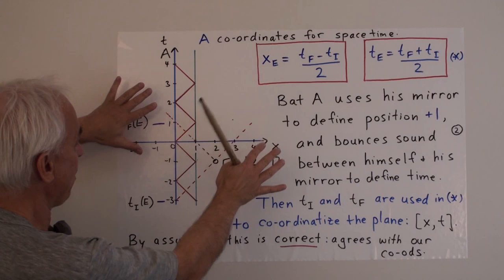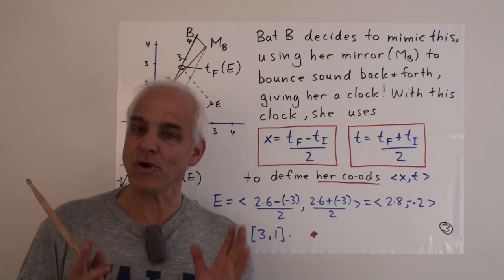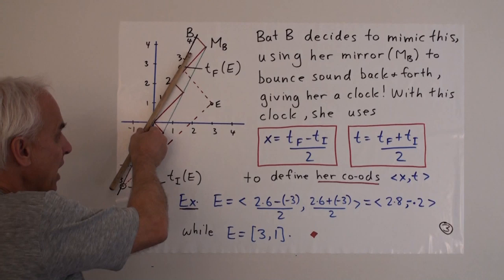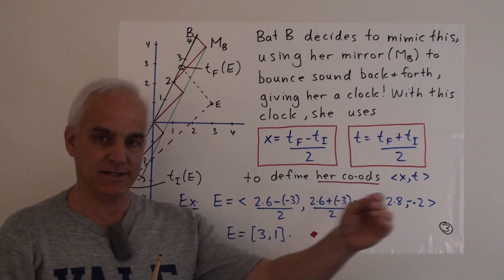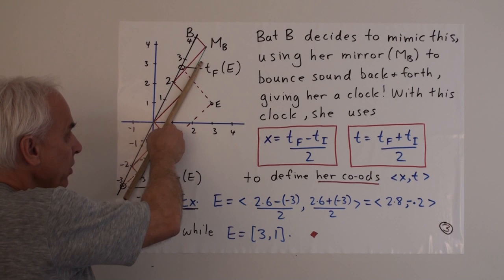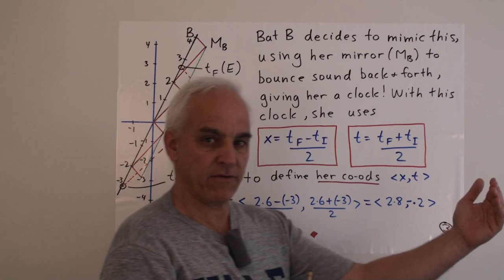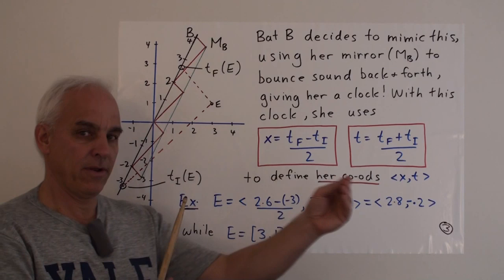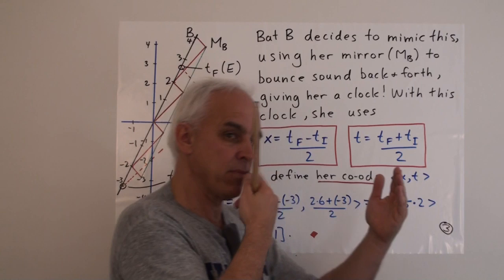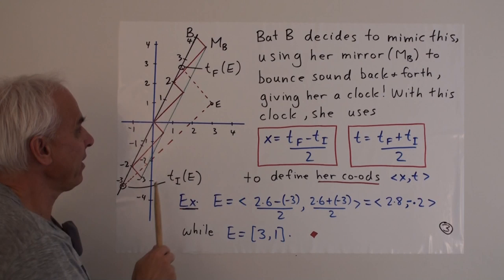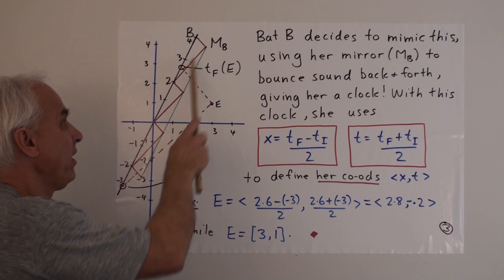Bat A uses his mirror first of all to define the position plus one — that's the world line of his mirror. He bounces sound between himself and his mirror to define time: tick-tock, tick-tock, and so on. Then t_i and t_f are used to coordinate the plane. In other words, we can determine the position of an event in space-time by essentially recording the times of the output and input signals. By our assumption — we're living in a Newtonian world here — this is actually correct: it agrees with our coordinates. When A asserts that the position of this event is (2, -1), that actually agrees with us.